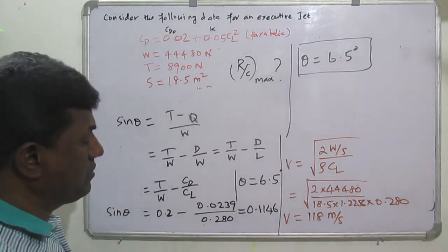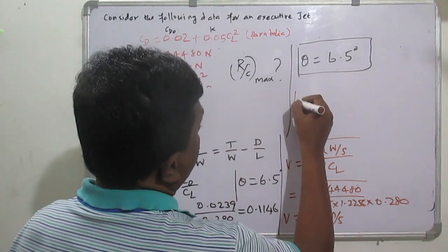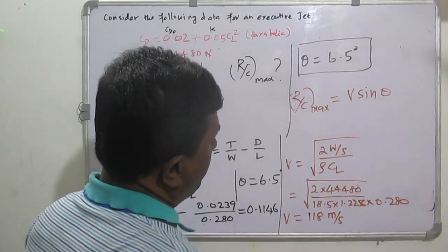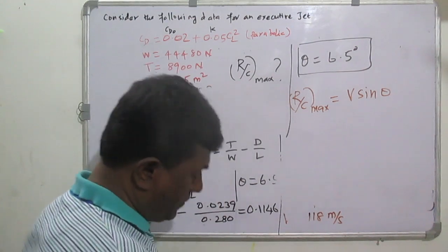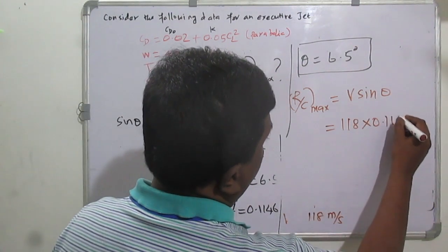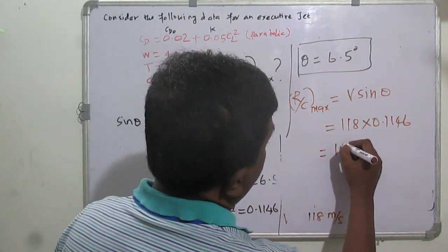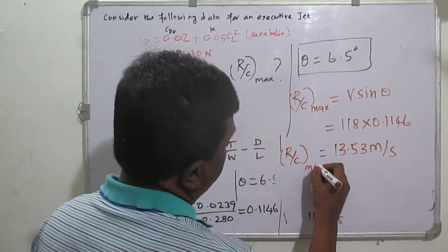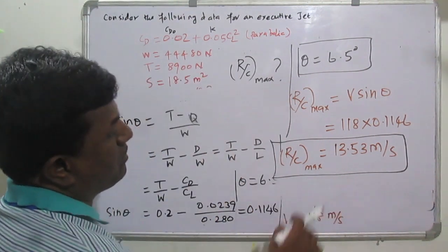Now we have obtained the velocity and sine theta. We can calculate the rate of climb. The maximum rate of climb equals V × sine theta. V is 118 and sine theta is 0.1146. By doing the calculation, the maximum rate of climb comes around 13.53 meters per second. So we are getting the maximum rate of climb for the given data as 13.53 meters per second.